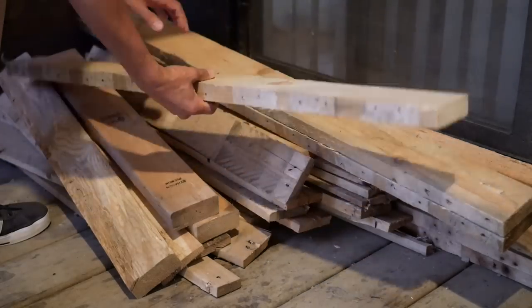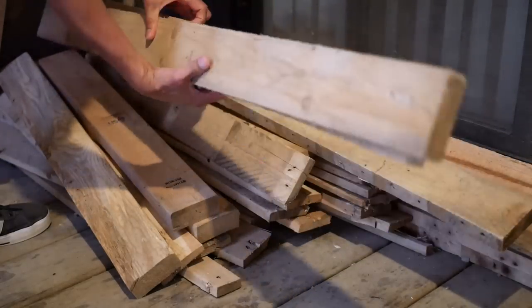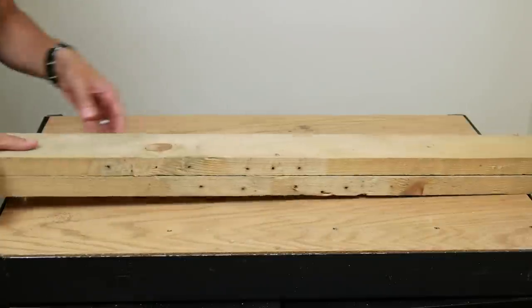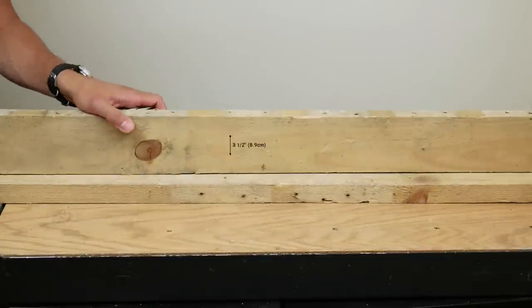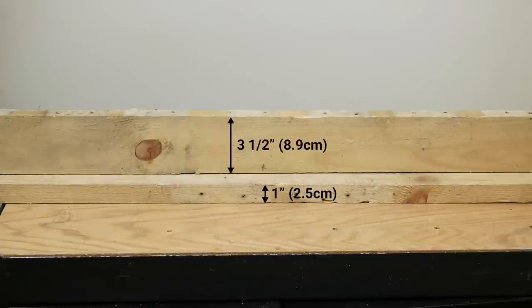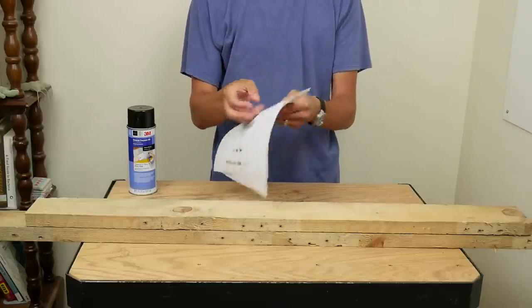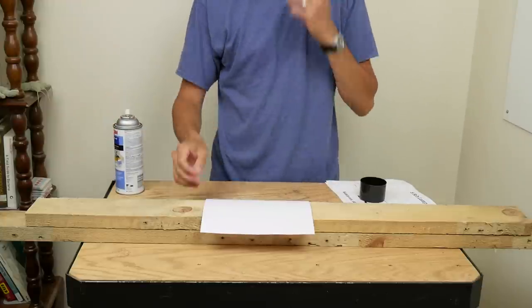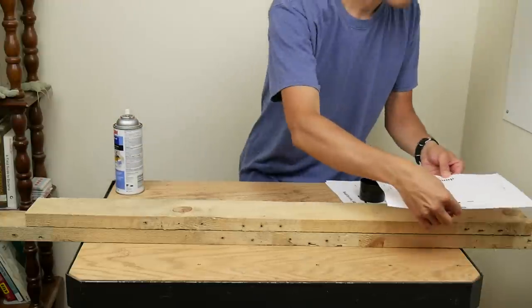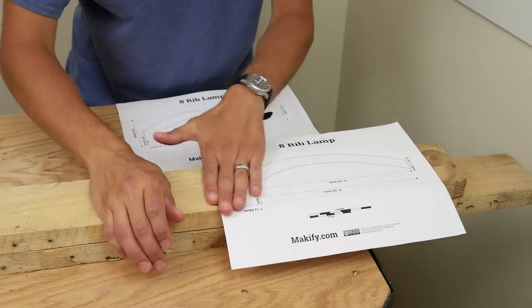I went to my stash of pallet wood and picked out a couple of nice pieces. They were three and a half inches wide and one inch thick. I printed out eight copies of a template I made and used spray adhesive to stick them to the wood. You can download this template for free, link below.